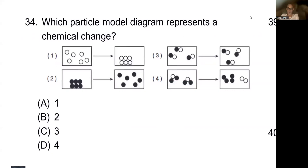Question 34: Which particle model diagram represents a chemical change? We have to understand there are two types of change. A chemical change means chemically something is going to be different. For example, if I were to take water and turn it into hydrogen and oxygen, that is a chemical change.